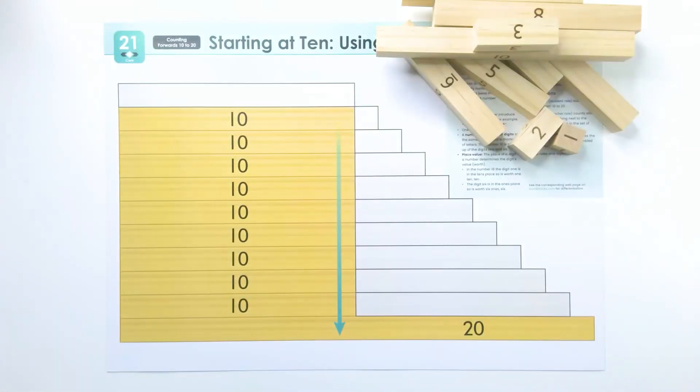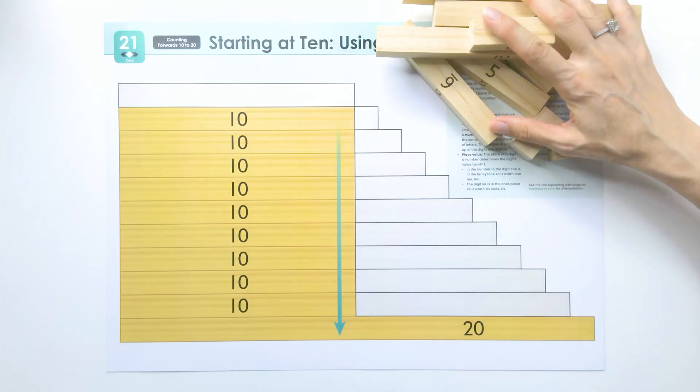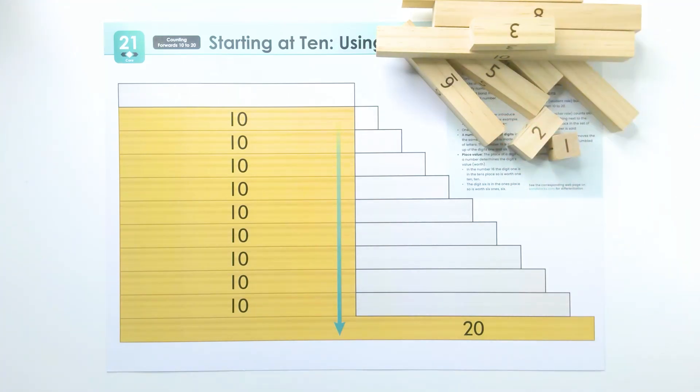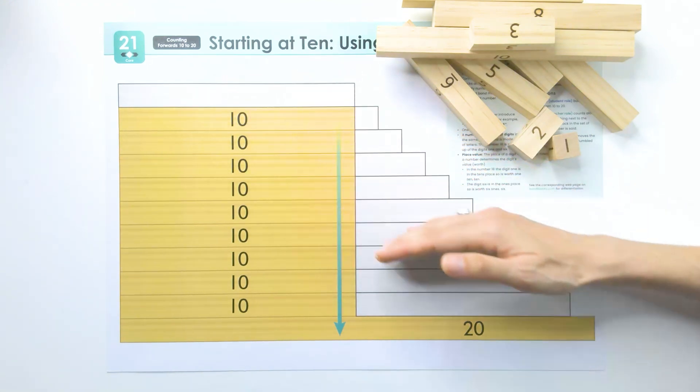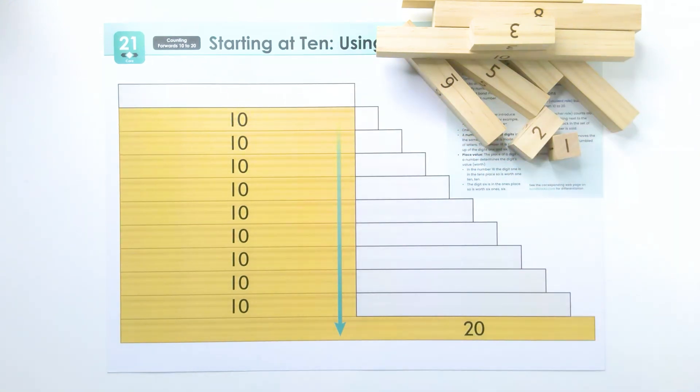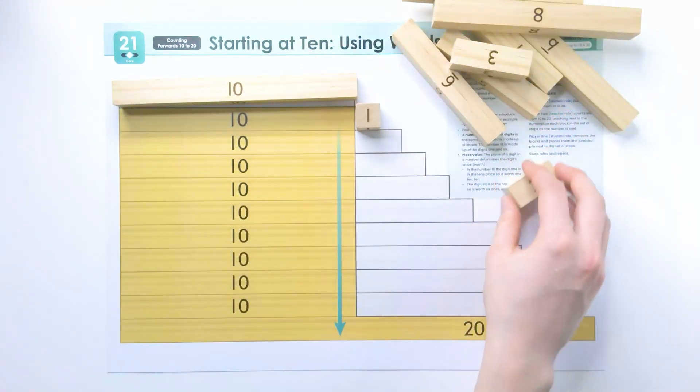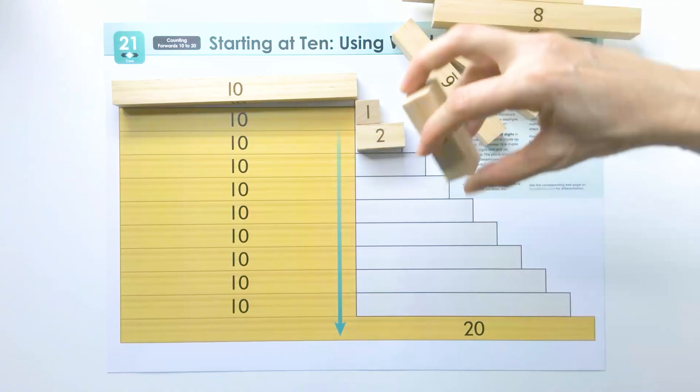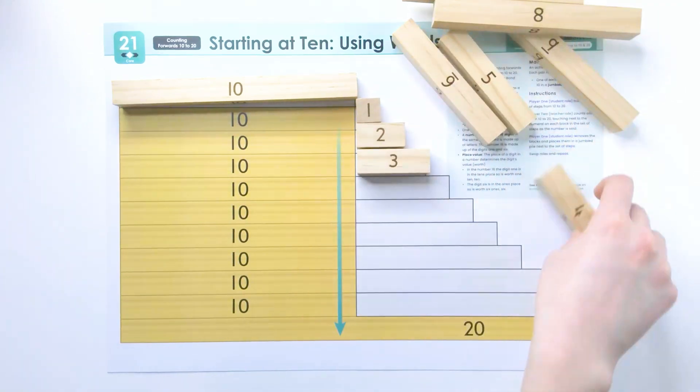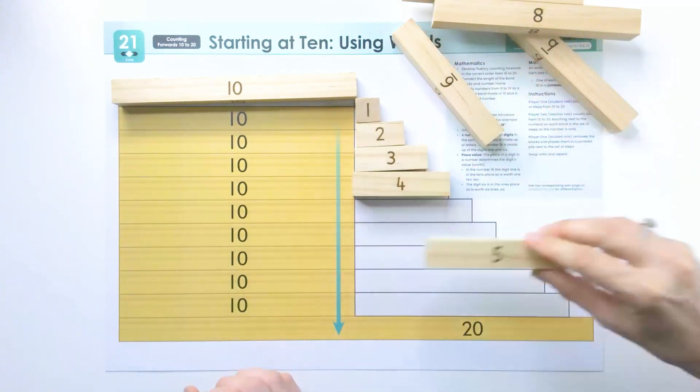To complete this activity, you need one of each block from 1 to 10 in a jumbled pile. You're going to work together with your partner to fill the set of steps from 10 down. So Karis, you pick up the first block. And I'll do the next one. My turn. My turn. Thank you.